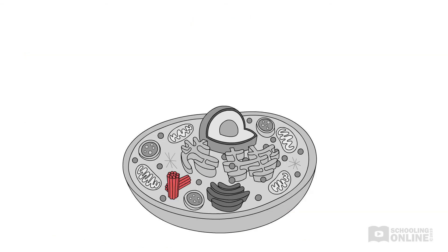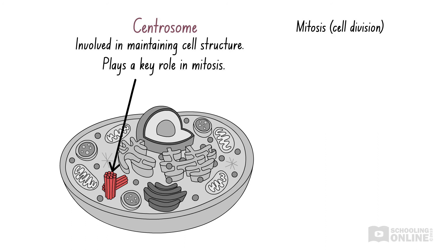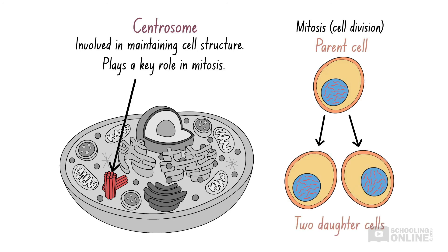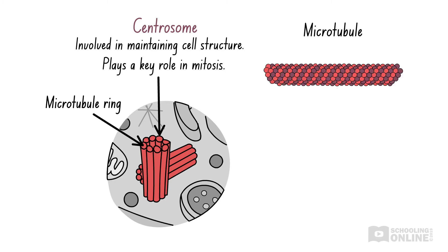Let's explore another organelle related to cell structure. The centrosome is an organelle that is involved in maintaining cell structure. The centrosome also plays a key role in mitosis — the process of cell division, which involves one cell splitting into two genetically identical daughter cells. We'll discuss mitosis in our upcoming videos on mitosis in the topic cell replication. The centrosome consists of two microtubule rings, which are composed of proteins made of long chains of amino acids.